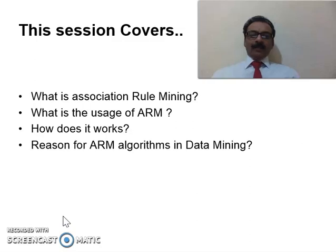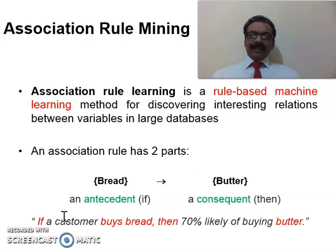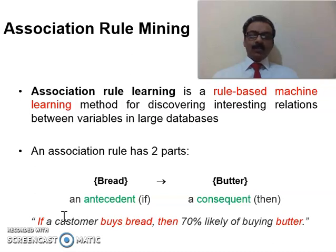In this video, I'm going to cover what is Association Rule Mining, what is its usage, how does it work, and what are the reasons to have different Association Rule Mining algorithms in data mining. Association Rule Learning is a rule-based machine learning method for discovering interesting relations between variables in large databases. Rule Mining is a machine learning technique that induces a target function from examples, defined jointly as a set of if-then rules. This technique is a basic component of many machine learning systems and has been the first machine learning technology to deliver commercially successful applications.